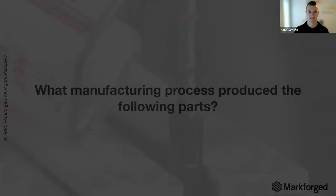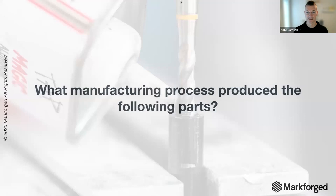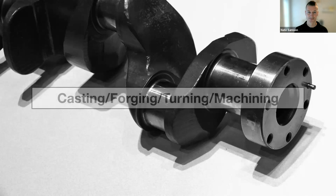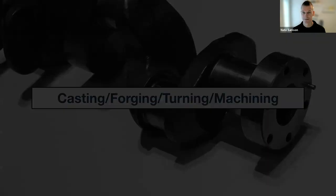What manufacturing processes produce these parts? I'm going to show a couple of examples. We've got a crankshaft — think about how this is produced, what processes are used to make this part. We've got casting, forging, and turning to produce a part like that.